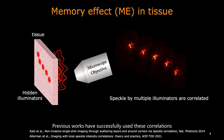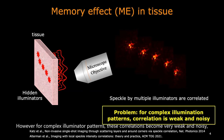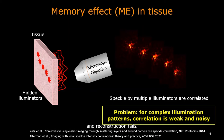Previous work has successfully used these correlations to reconstruct the hidden illuminator layout. However, for complex illuminator patterns, these correlations become very weak and noisy, and reconstruction fails.